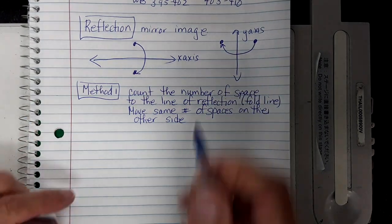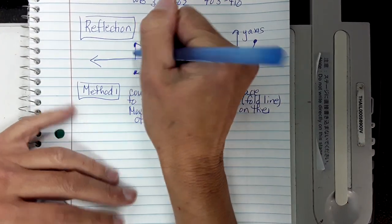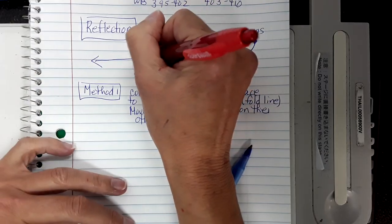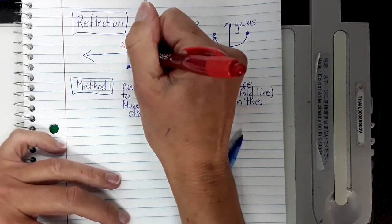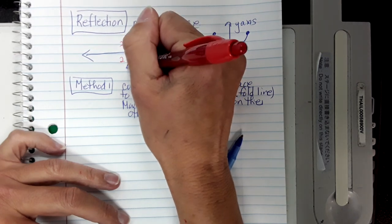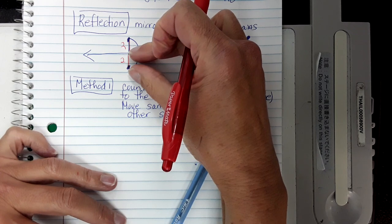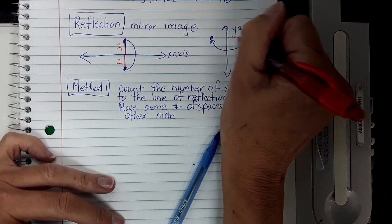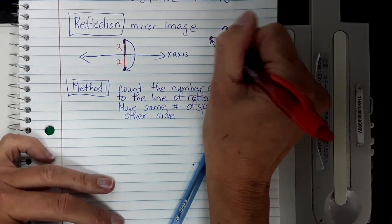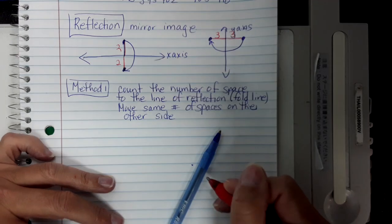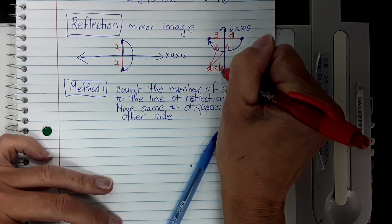Let's say I had my point over here and the distance was two, and I wanted to fold it over the x-axis. When I fold it and count two spaces, I have to count two spaces the other way — that's where my point is going to be. Notice the distance from that line of reflection is the same. If the distance from here to here is three, I have to make sure the distance from this side to the line of reflection is also three. The distance has to be the same.